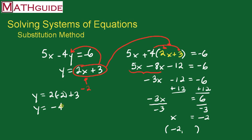I'm going to multiply 2 times negative 2, get negative 4, and I'm going to add 3. So I'm going to add those two together and get negative 1. So my y value is negative 1.